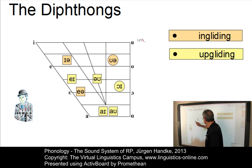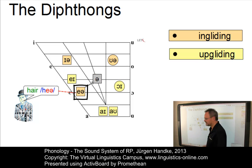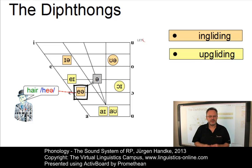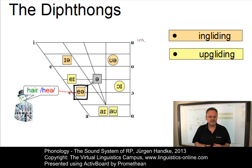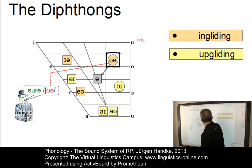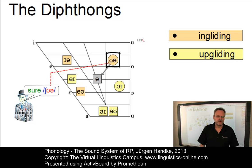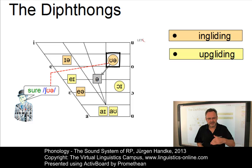The second ingliding diphthong, 'here,' has a first element that is pretty low — a mid-low front vowel, slightly lower than the lax monophthong E as in 'bed.' The third ingliding diphthong, 'sure,' has a first element that is a mid-high back U, but again it is often produced slightly too high by non-native speakers of RP.